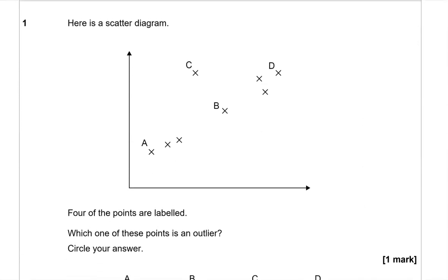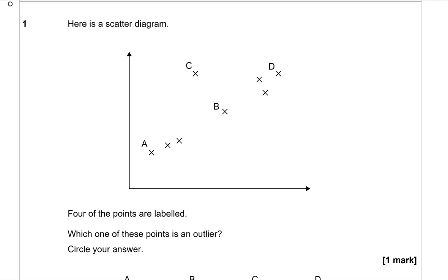Question 1. Here is a scatter diagram. Four of the points are labeled. Which one of these points is an outlier? Circle your answer. As you can see from the points, this seems to be a negative correlation. So the line of best fit would go something like this. And the point that is further away from the line than most of the other points, that is C, as you can see.